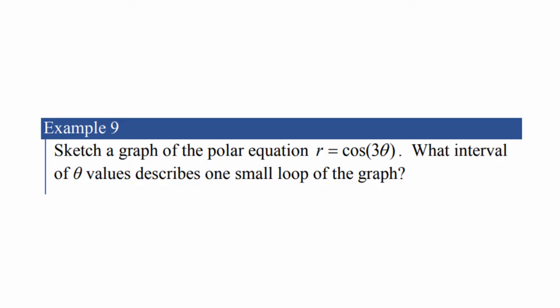Sketch a graph of the polar equation r equals cosine of 3 theta. What interval of theta describes one loop of the graph? Try it yourself first.